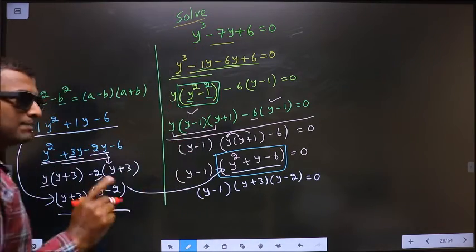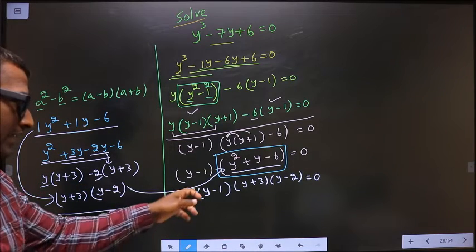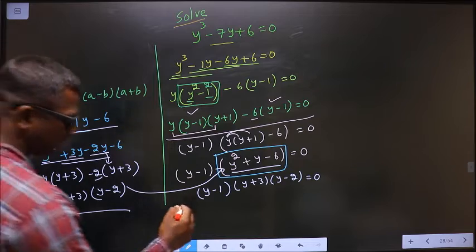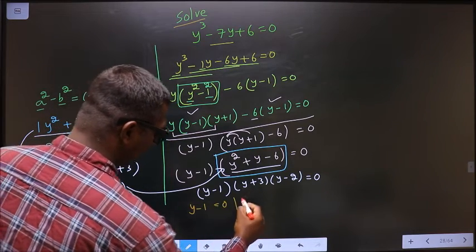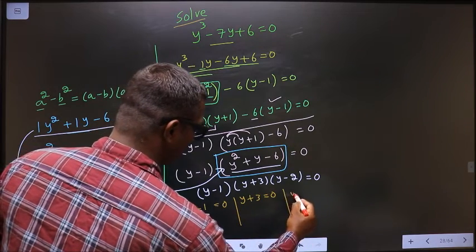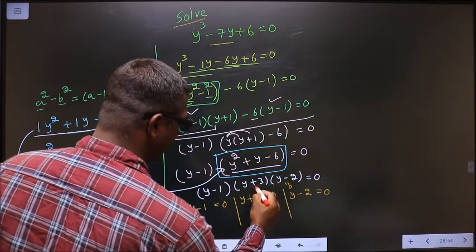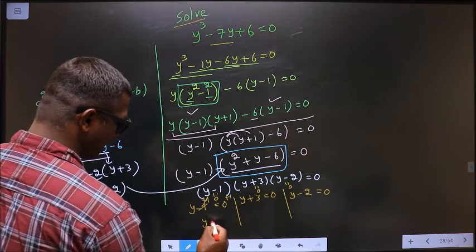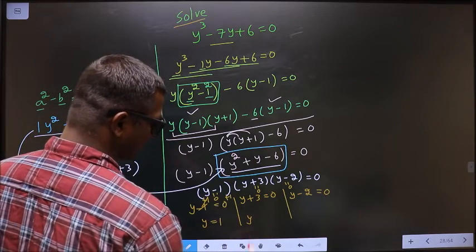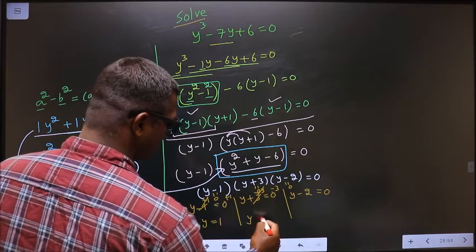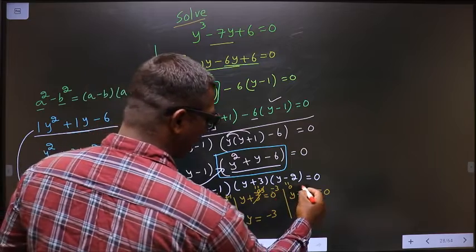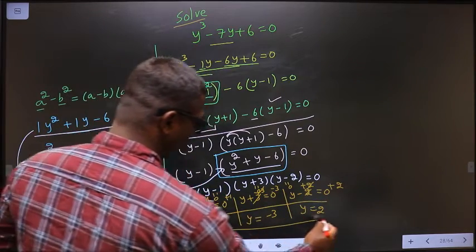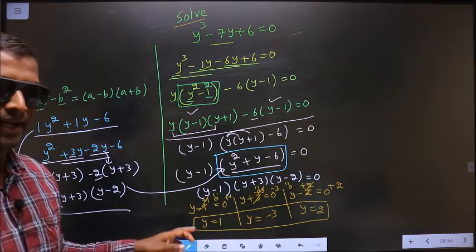They told you to solve, which means you need to find the values for y. Here, bracket product equals 0, so to get y, equate each bracket to 0. That is: y minus 1 equal to 0, y plus 3 equal to 0, y minus 2 equal to 0. Add 1 on both sides to get y equal to 1. Subtract 3 on both sides to get y equal to minus 3. Add 2 on both sides to get y equal to 2. These are the values for y, and this is our answer.